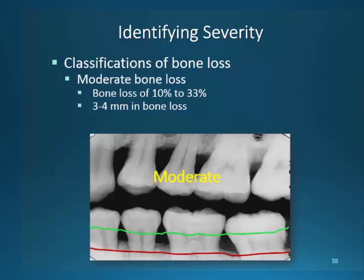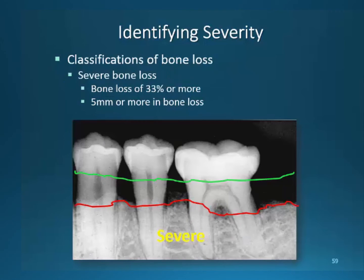Moderate bone loss occurs when 10 to 30% of the supporting bone has been destroyed. The red line indicates the migration of bone and the loss of support. 3 to 4 millimeters of bone has been lost, and when probing depths reach 3 to 4 millimeter readings, this determines the moderate bone level. Severe bone loss, also referred to as advanced, is the most threatening to tooth survival. This aggressive type involves more than 33% of supporting bone, with probing measurements ranging 6 millimeters and higher. The prognosis of this situation is relatively poor.